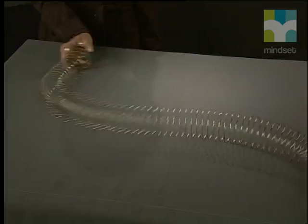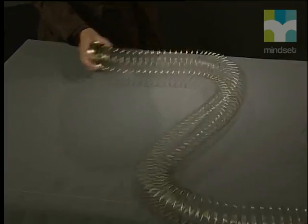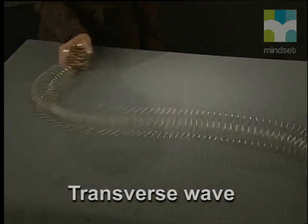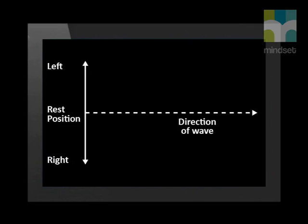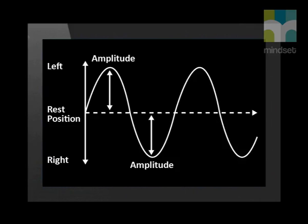To illustrate amplitude, let's take a look at a transverse wave traveling down a slinky. You will see that the coils of the slinky are disturbed at right angles to the direction in which the wave travels. Now let's look at a diagram of the wave. The maximum displacement of the particles from the rest position is the amplitude of the wave. We can measure the amplitude from the rest position to the crest of a wave, or we can measure it from the rest position to the trough.